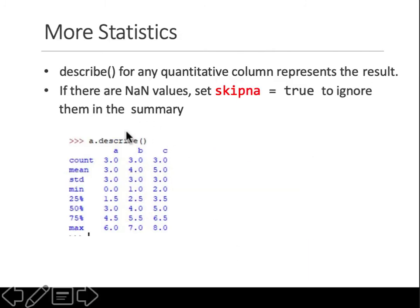The .describe() function on a DataFrame gives you specific summary statistics: count, mean, standard deviation, minimum, 25th percentile, 50th percentile, max, and so on for each column. If there are NaN values you can pass skipna=True inside the parentheses and they will be ignored in the summary; otherwise they will be included.